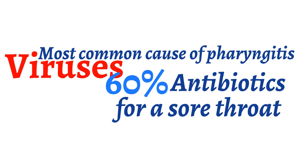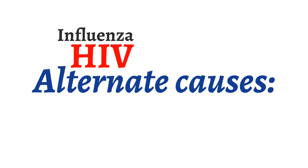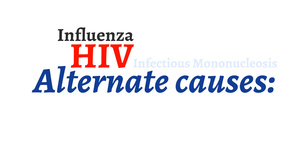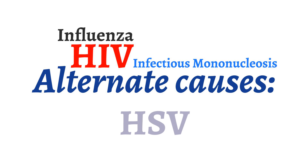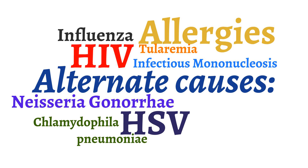Though we will not discuss them today, it is important to have a broad differential when evaluating pharyngitis. Besides group A strep, other causes include HIV, influenza, infectious mononucleosis or mono, HSV, Neisseria gonorrhea, Chlamydophila pneumoniae, and even tularemia. The most common non-infectious cause of pharyngitis are allergies.